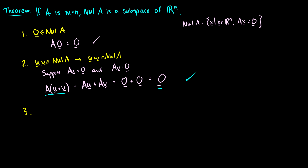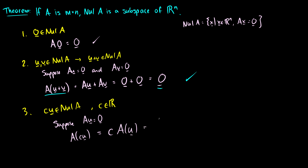Third, we need to show that c times u is in null(A) for any scalar c in the reals. Suppose Au = 0. Then A(cu) = c(Au) = c times the zero vector = the zero vector. Therefore A(cu) produces the zero vector, so cu is in the null space of A for any c. We've proven that the null space of A is a subspace of R^n.